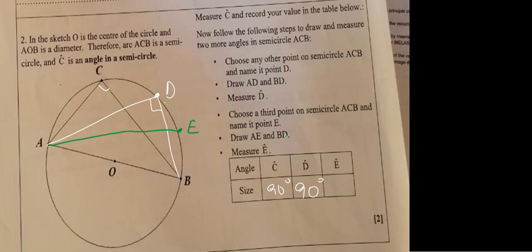Now there should be a mistake here. They wanted to say draw AE and draw BE. This makes more sense, and this is 90 degrees. So even here you will measure 90 degrees. Then the next question will ask what is it that you observe.